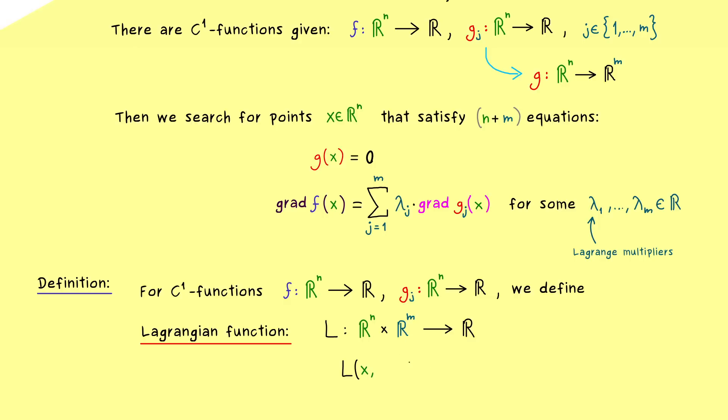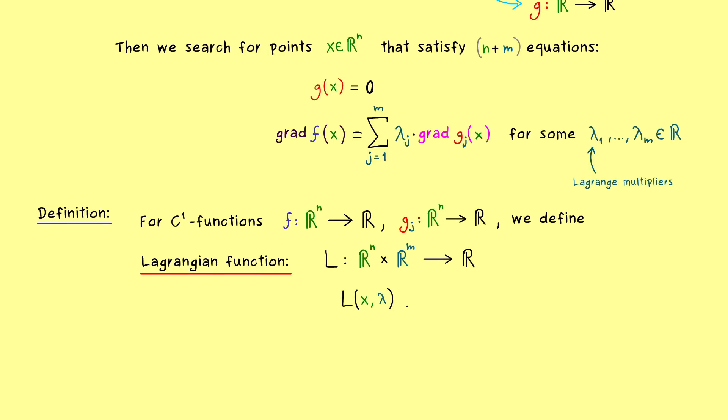And now what we usually do is to write L of x and lambda. Hence this lambda here is now a vector with m components. And now I would say, the only thing you have to remember now is the definition of this Lagrange function. So this one is important. It is given by the function f minus a combination of lambda with the function g. And now the common way to write this is lambda times g. And here the dot denotes the standard inner product in Rm.